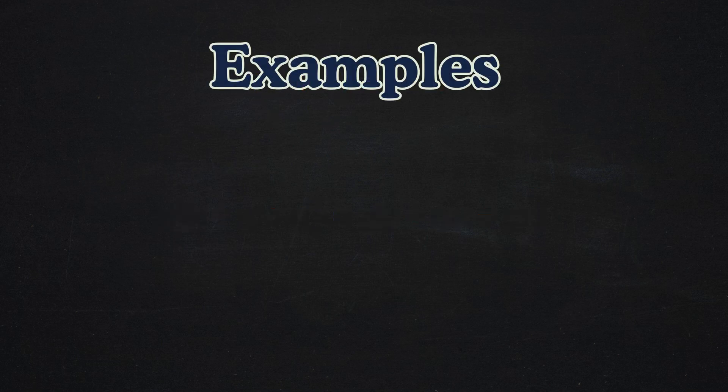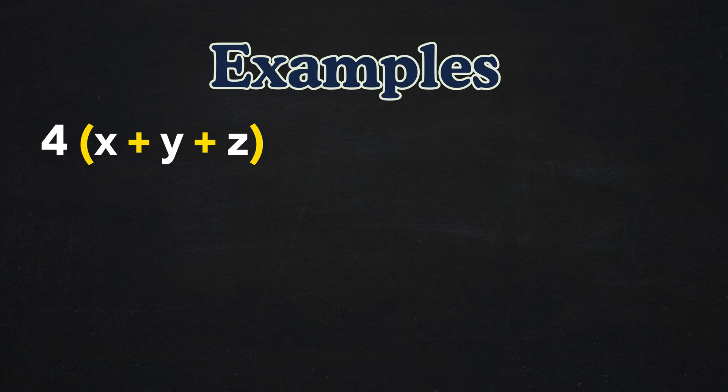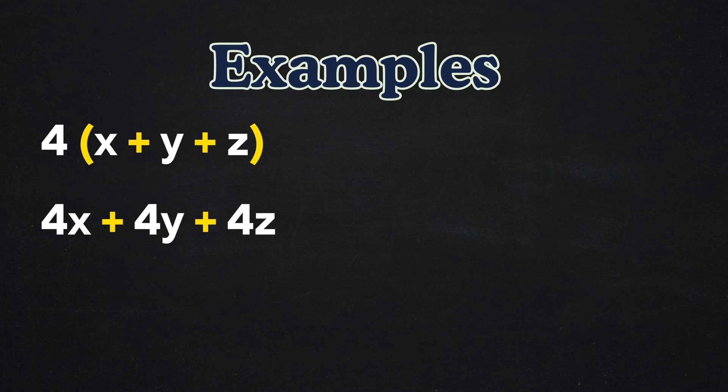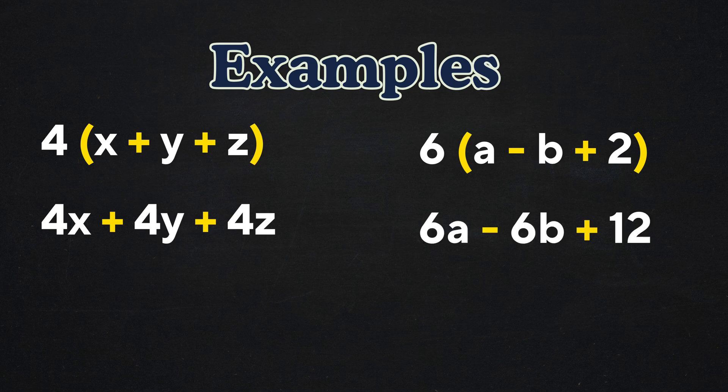Let's look at some examples that include a combination of numbers and variables to help us see the pattern of distributive property. 4 times the group x plus y plus z becomes 4x plus 4y plus 4z. 6 times the group a minus b plus 2 becomes 6a minus 6b plus 12 since 6 times 2 equals 12.